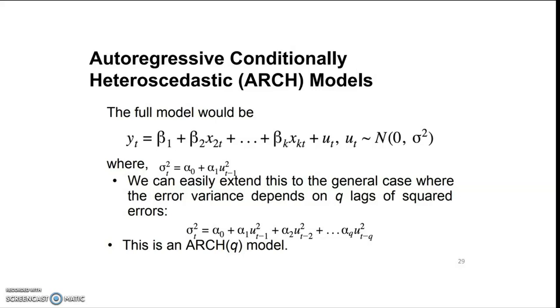The full model may be written as Yt = β₁ + β₂x₂t + ... + βₖxₖt + ut, where ut is normally distributed with zero mean and variance σ² where σ²t = α₀ + α₁ut₋₁².